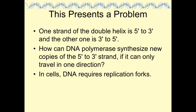Because you can only build off the free 3' end, there is a problem: one strand runs 5' to 3' and the other runs 3' to 5' — that's the anti-parallel nature. In cells, the DNA solves this with a replication fork that opens and replicates in both directions. One strand is replicated continuously, while the other is replicated in short pieces that are joined by DNA ligase.